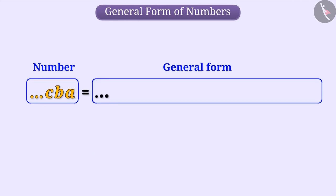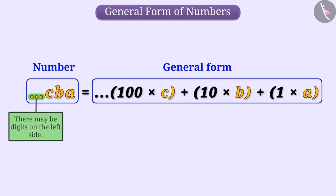In this way, we can write any number CBA in its general form as 100 × C + 10 × B + 1 × A. Here, by making a point like this, we show that there can be digits to the left of C.